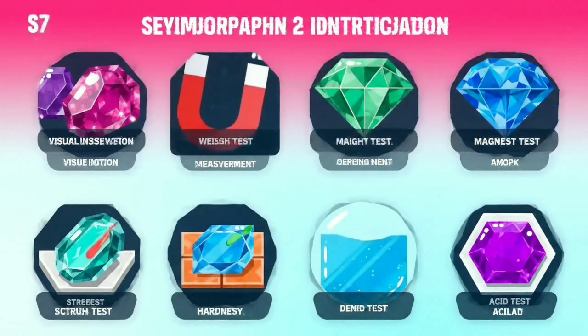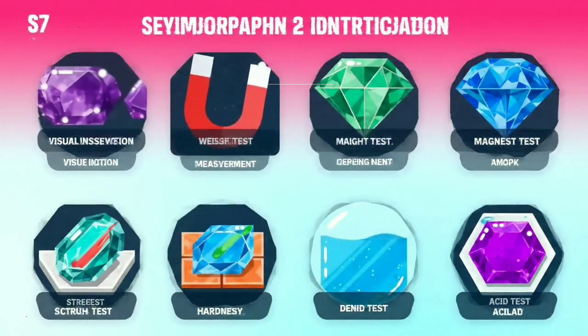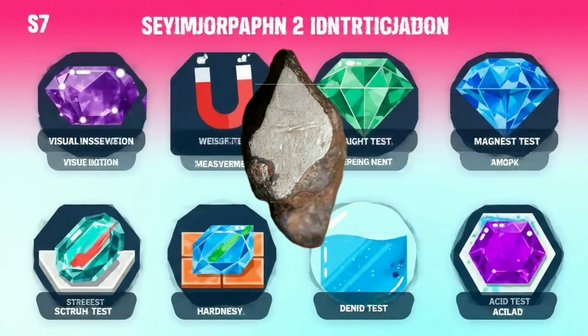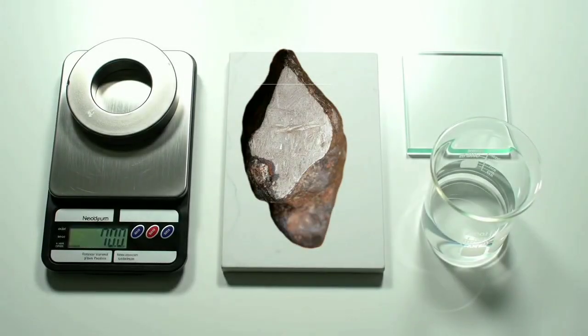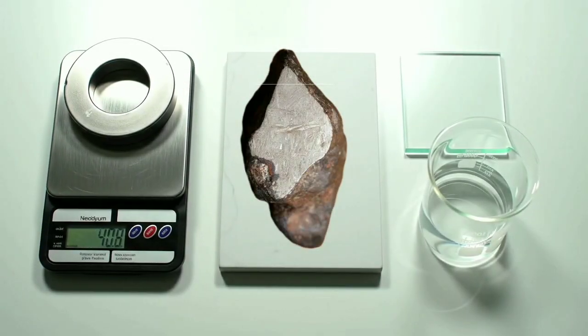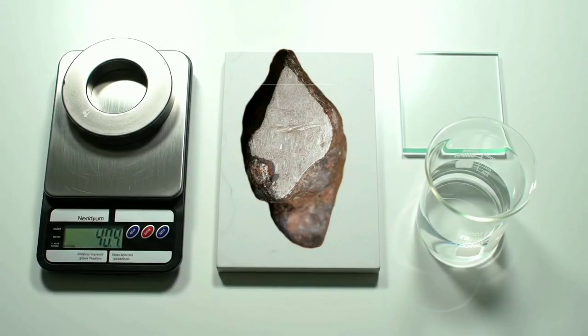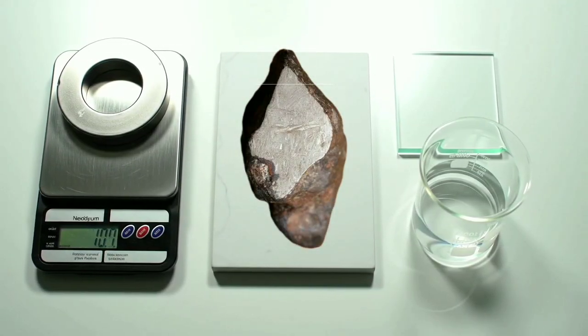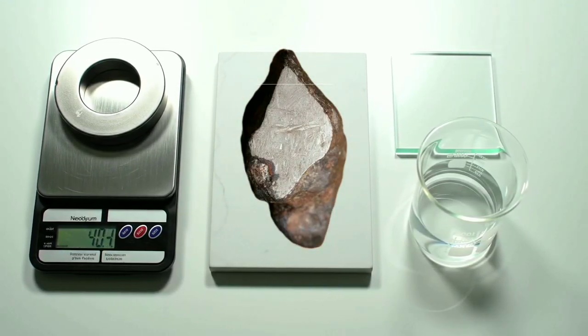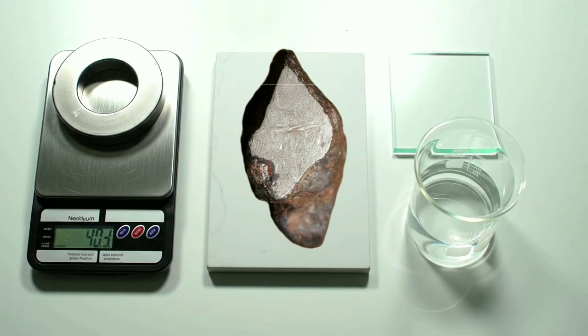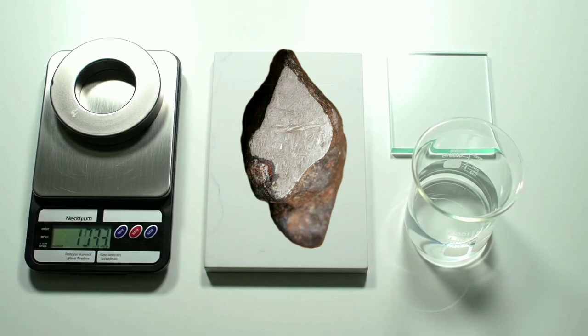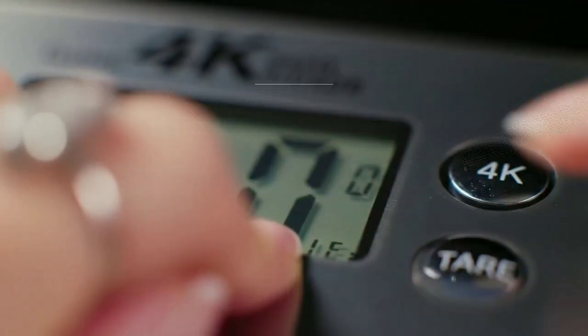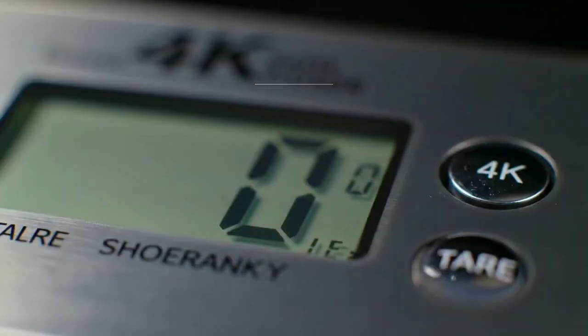These are the essential tools: a precise digital scale, a strong magnet, an unused porcelain tile, a glass plate, and a mild acid solution. First, place your scale on a flat surface and press tare to zero it, ensuring an accurate reading of your sample's weight.